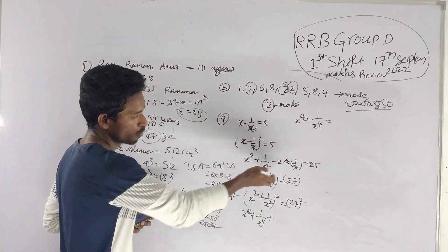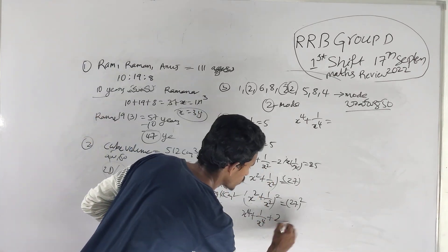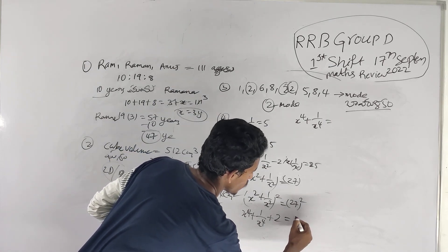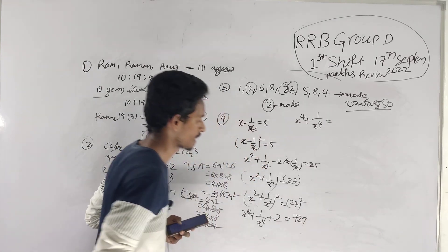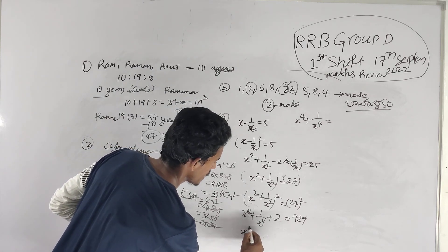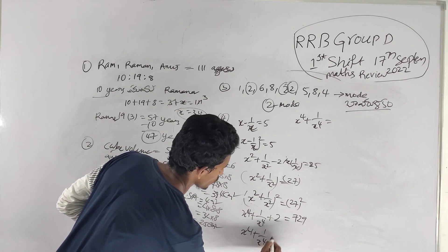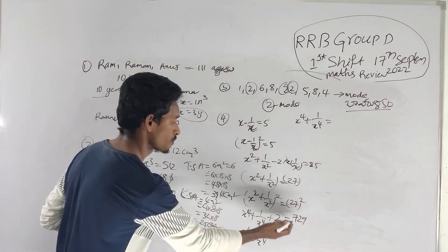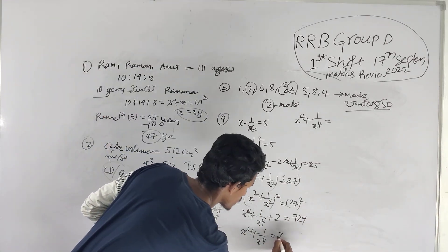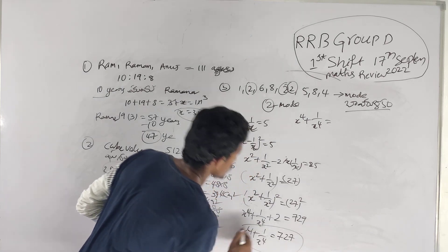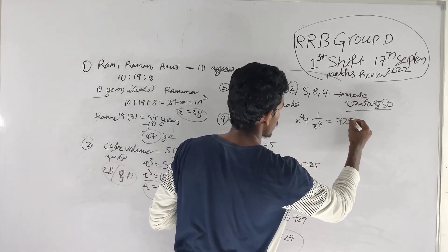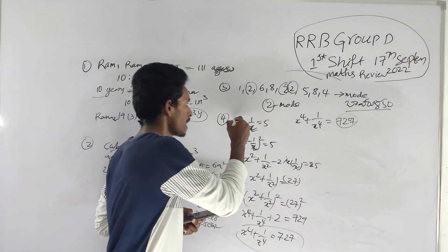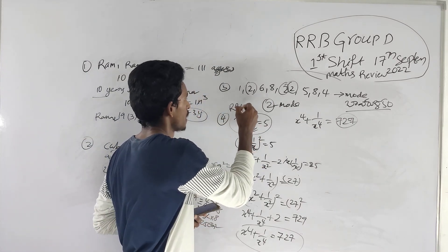Now squaring again: (x² + 1/x²)² = 27² = 729. So x⁴ + 1/x⁴ + 2 = 729, which means x⁴ + 1/x⁴ = 729 − 2 = 727. The answer is 727.